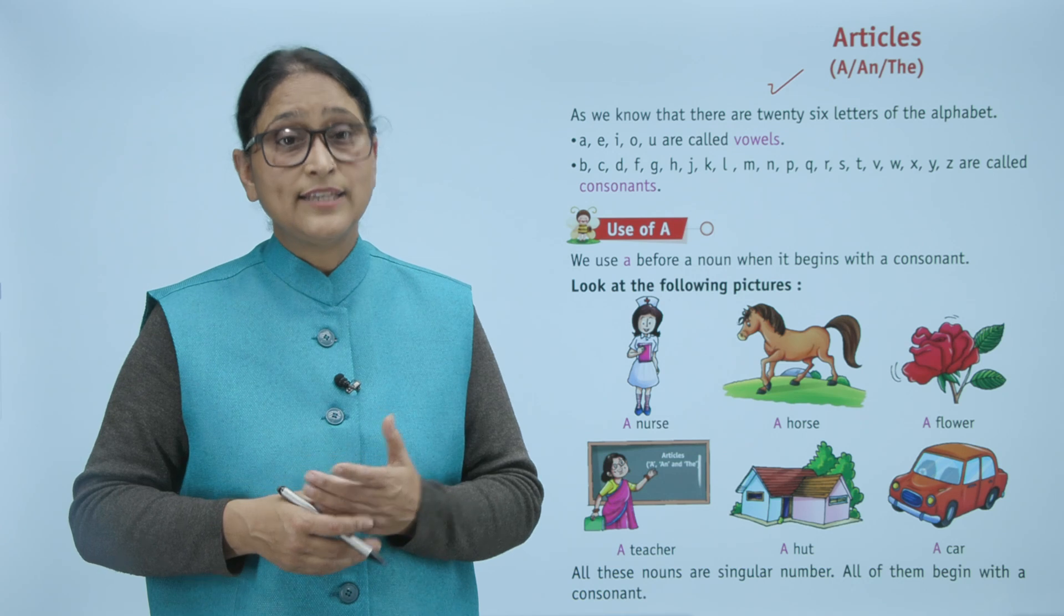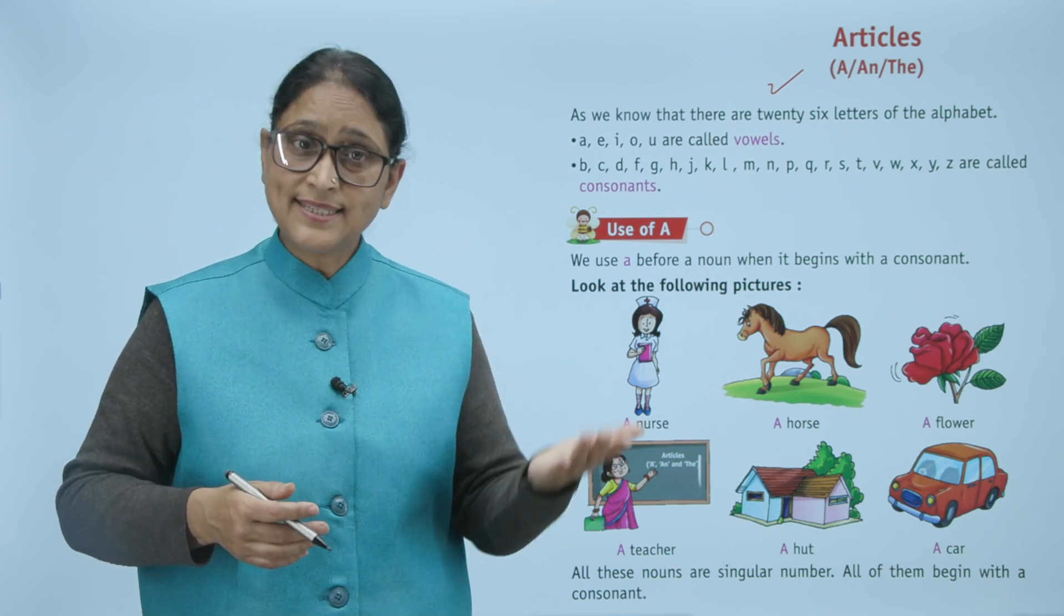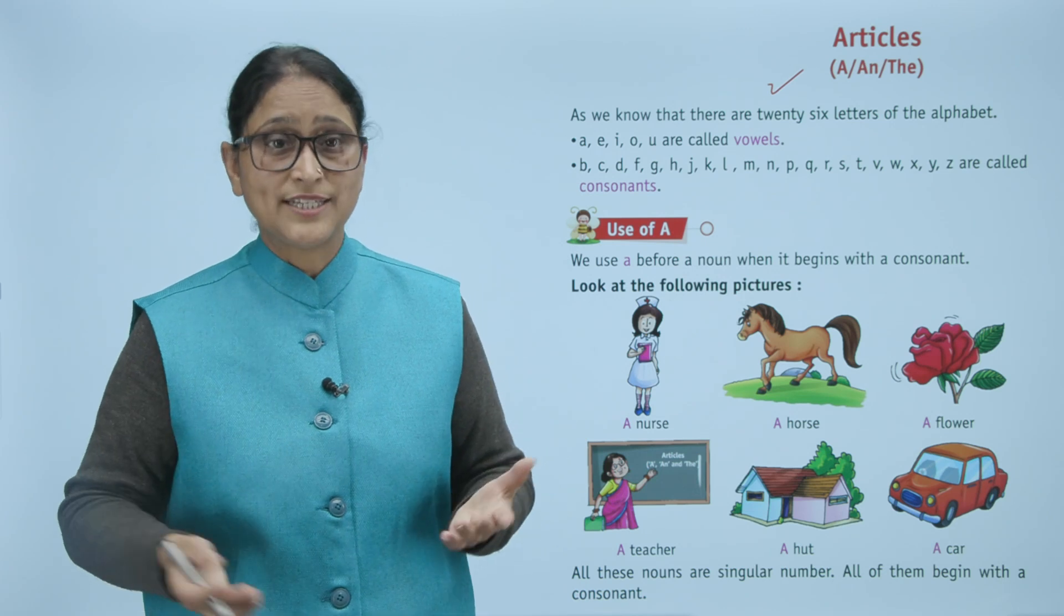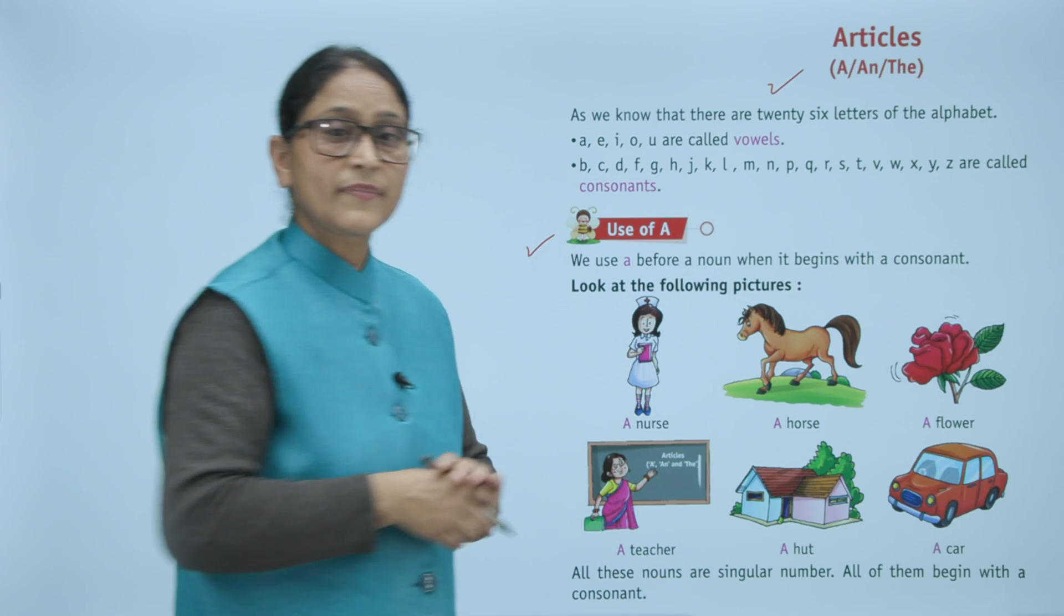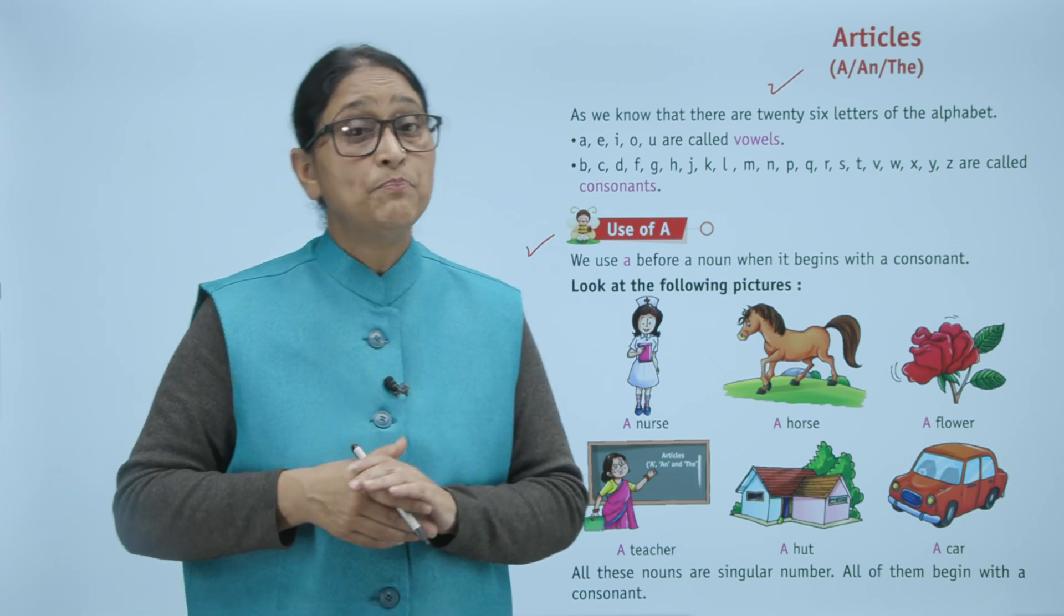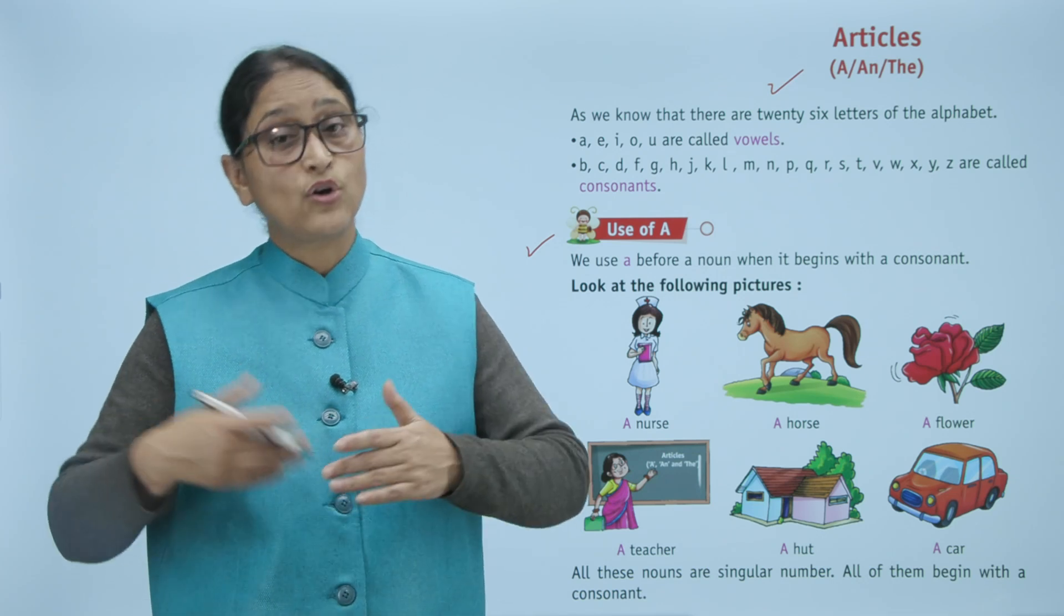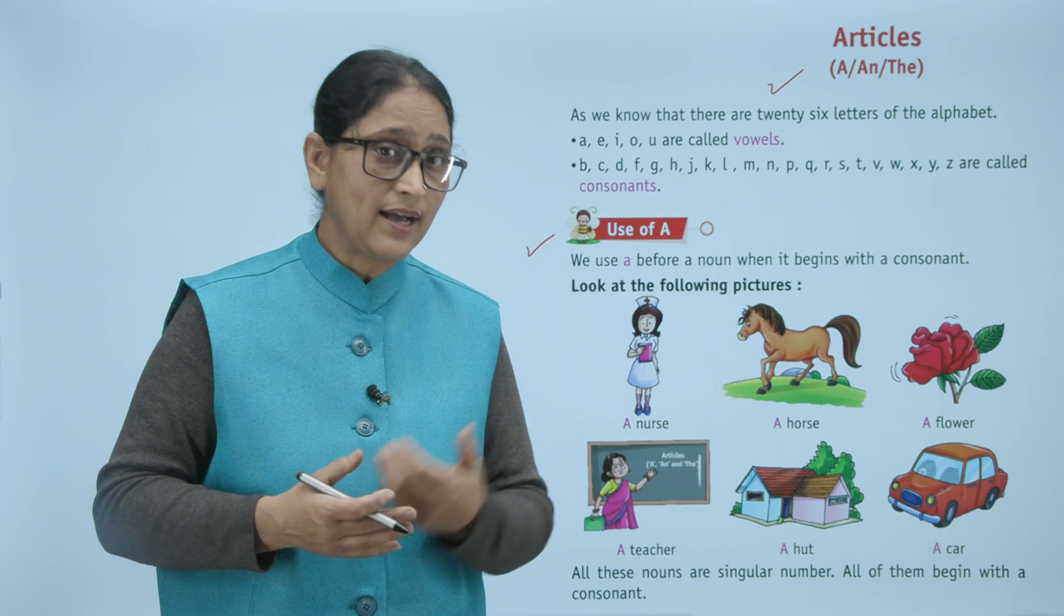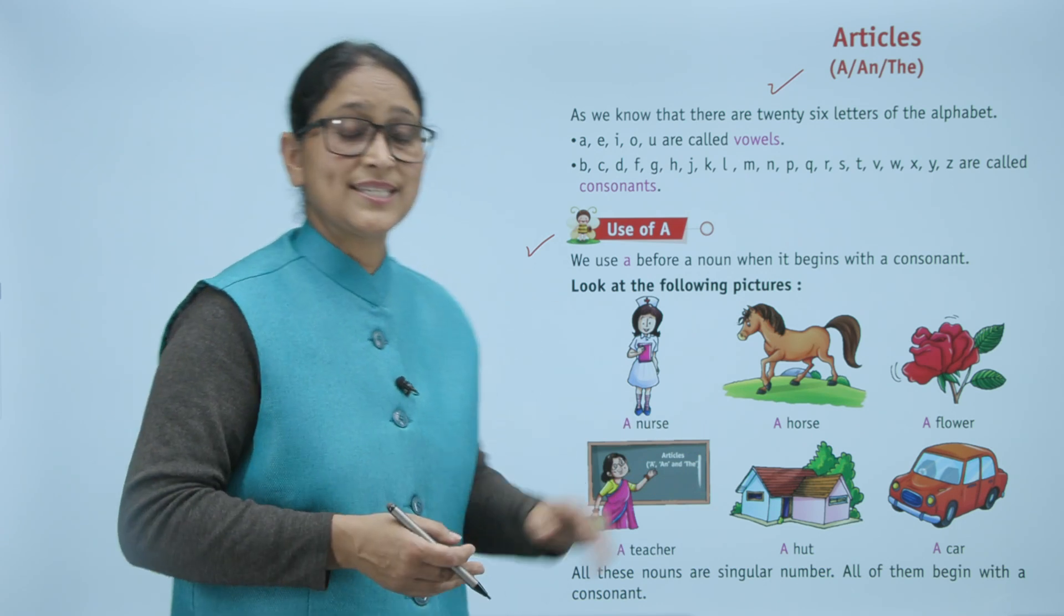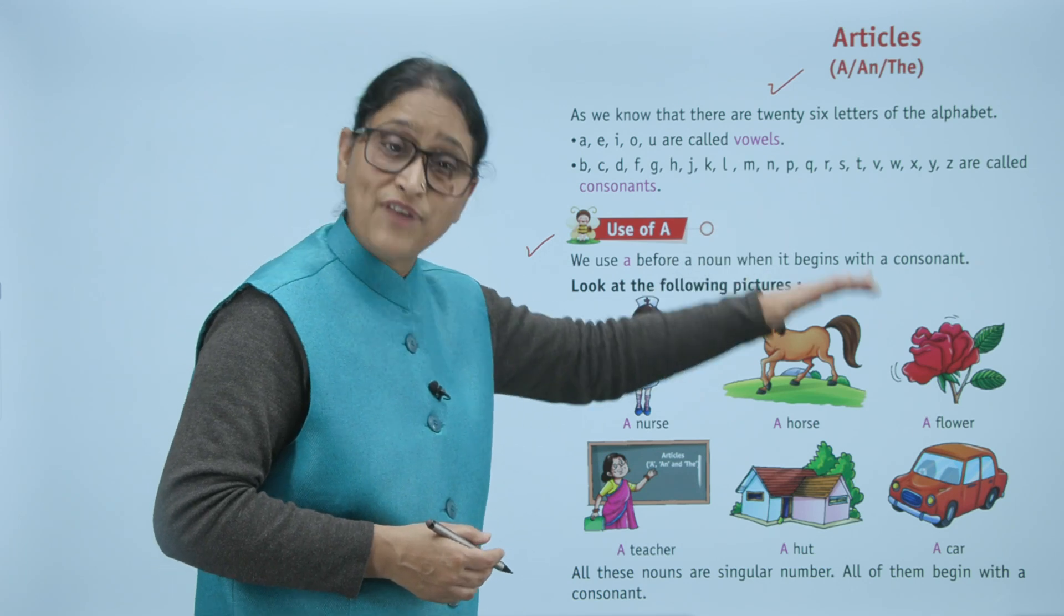26 letters may say, 5 are vowels and the rest 21 are consonants. Now use of 'a': we use 'a' before a noun when it begins with a consonant. Now look at the following pictures: a nurse, a horse, a flower, a teacher, a hut, a car.